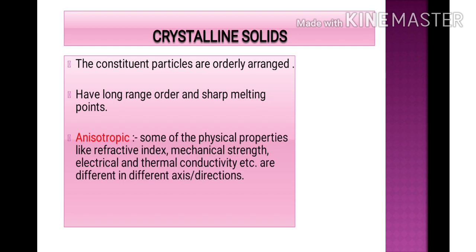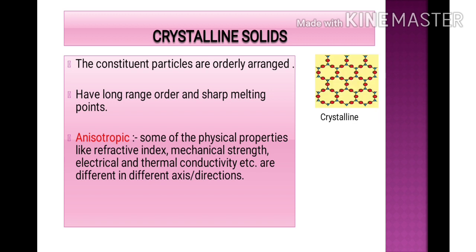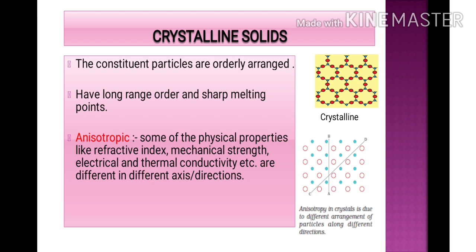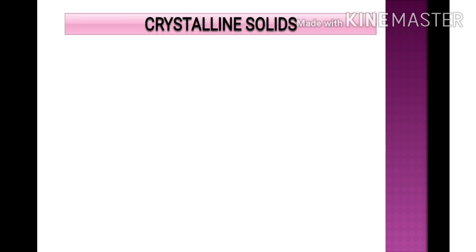Crystalline solids have a sharp melting point and are anisotropic in nature — meaning their properties vary in different axes. Physical properties like refractive index, mechanical strength, and electrical and thermal conductivities are different in different directions. For example, moving from A to B in an anisotropic crystal gives a particular arrangement, while moving from C to D gives a different arrangement. This is the anisotropy property, which is characteristic of crystalline solids.